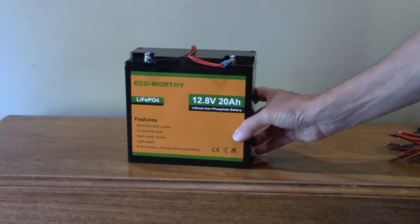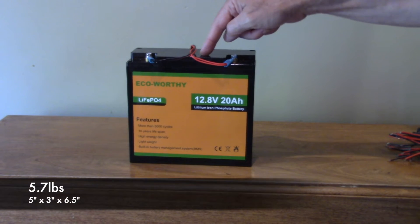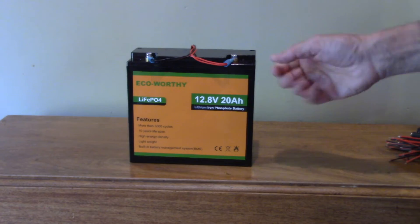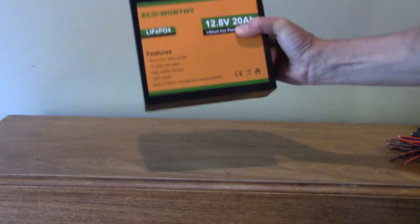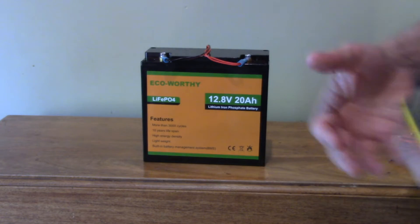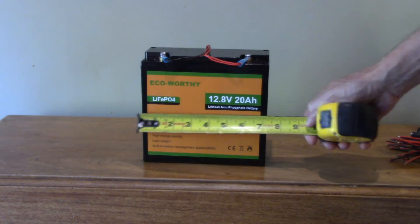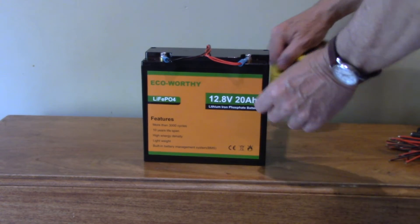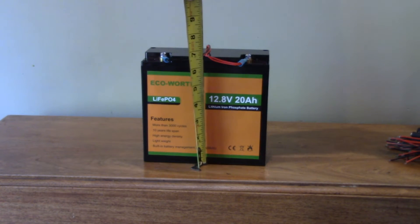Let's talk about the physical dimensions here. This weighs 5.7 pounds or 2.6 kilograms. And so, I mean, it's not that heavy. I can carry it around with one hand, so it's really not that big a deal. And then if we look at the dimensions here, we've got about seven inches this way, three inches this way, and about six and a half high.